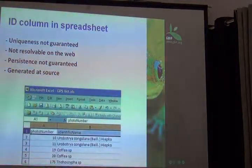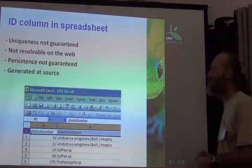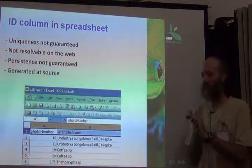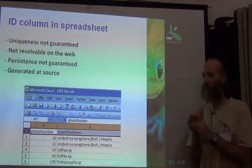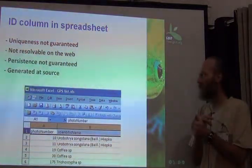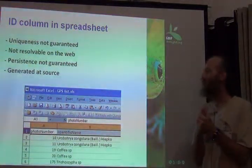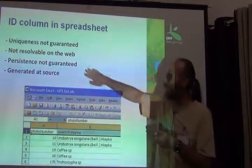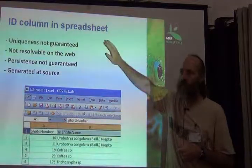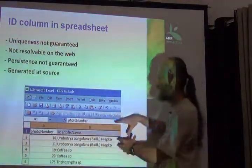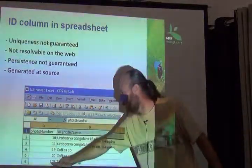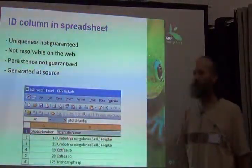Let's talk about each identifier type in detail and their characteristics. We're interested in a global identification system with several attributes. Uniqueness globally is one of them. For a spreadsheet, uniqueness is not guaranteed — it's something to use within that spreadsheet. Here's our example from Moses where his photo number is a column in the spreadsheet, and that is an identifier.